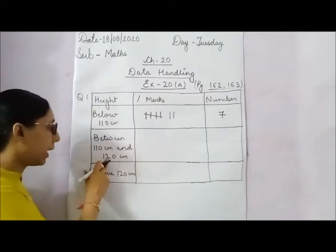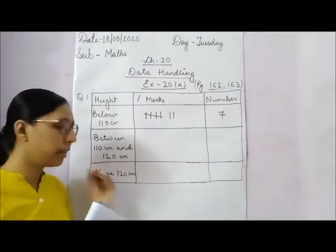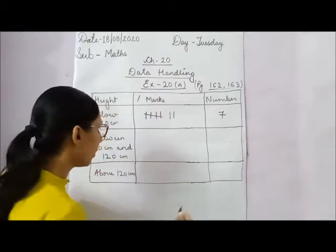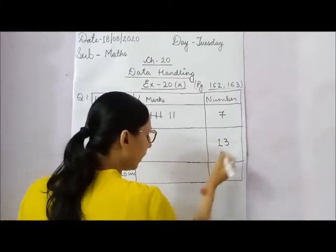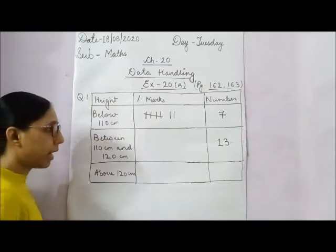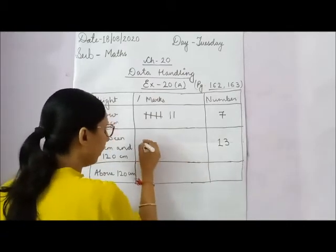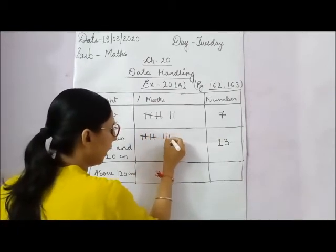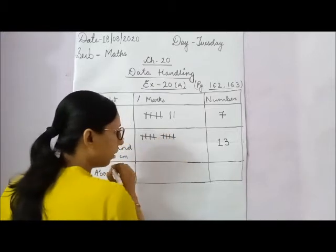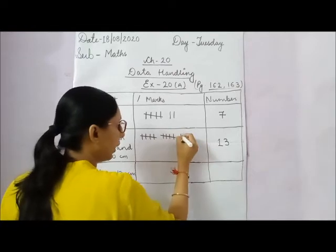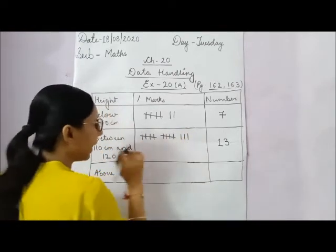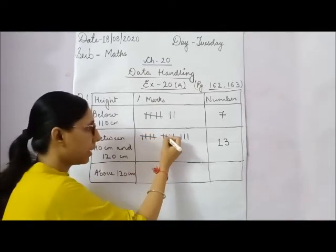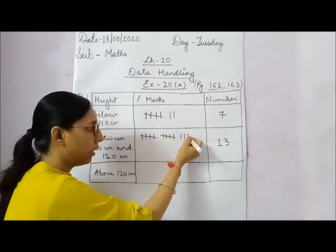Now count between 110 and 120 cm. There are 13 numbers. Count: 1, 2, 3, 4, 5, 6, 7, 8, 9, 10, 11, 12 and 13.